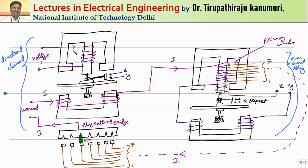The current passes through the plug setting bridge and returns to the supply. The directional relay's upper and lower magnets are always connected to supply, carrying voltage as well as current. A current IV flows due to the applied voltage, and the torque in the disk is produced by the interaction of the flux from IV and the fault current I. When the disk rotates and closes the contacts, this closes the secondary winding of the overcurrent relay, and EMF is induced in the secondary winding by transformer action, producing flux phi 2.